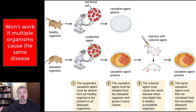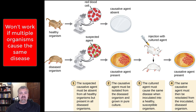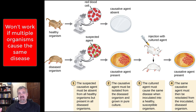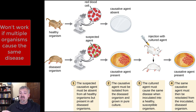Number two: if multiple organisms cause the same disease, you're going to have a problem. Think about the common cold — lots of different organisms can cause it. You can prove that one organism is a causative agent of a certain disease, but you can't say it's the causative agent if there are multiple organisms that can cause the same disease.